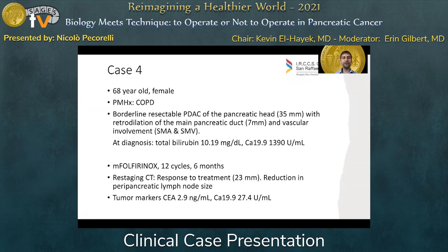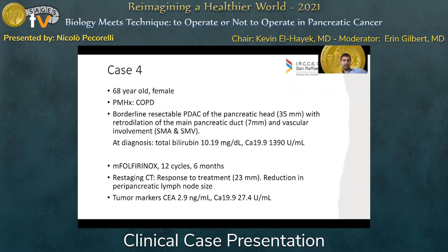Case four: a 68-year-old female with a past medical history of COPD — she was a heavy smoker. She has a diagnosis of borderline resectable pancreatic cancer of the head of the pancreas with retrodilation of the main pancreatic duct and vascular involvement of both the superior mesenteric artery and vein. CA 19-9 is around 1,400 with associated cholestasis and elevated bilirubin. She undergoes neoadjuvant chemotherapy with FOLFIRINOX — 12 cycles in six months, well tolerated. At restaging CT scan, there is a response with downsizing of the tumor, reduction in peripancreatic lymph node size, and normalization of tumor markers.